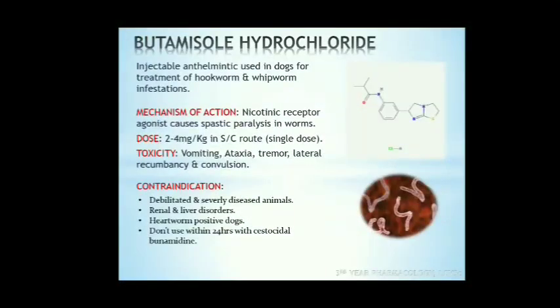Next is butamisole hydrochloride. Butamisole hydrochloride is an injectable anthelmintic used in dogs for the treatment of whipworms and hookworms (Ancylostoma caninum infestations). The dose is 2-4 mg/kg subcutaneously as a single dose; IM injection is not advisable as it causes pain. Adverse effects include vomiting, ataxia, tremor, lateral recumbency, and convalescence. The drug should not be given to debilitated and severely diseased animals. It should not be administered to heartworm-positive dogs with renal and liver disorders. It should not be used within 24 hours of the cestocidal drug cunamide.